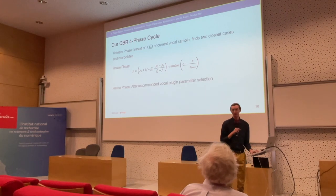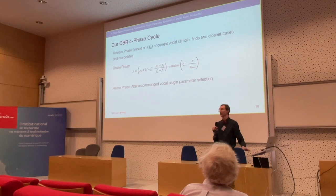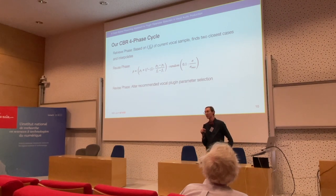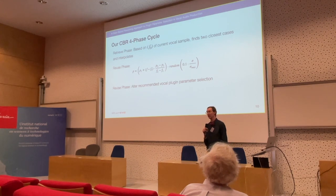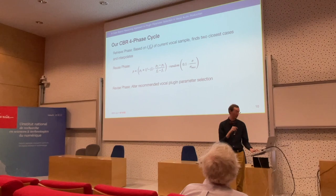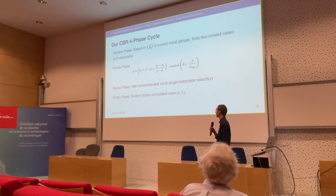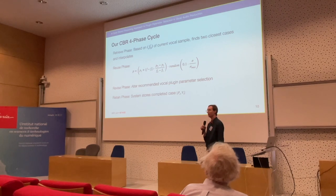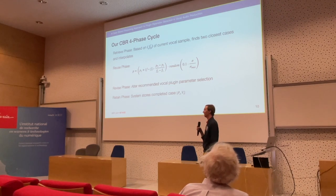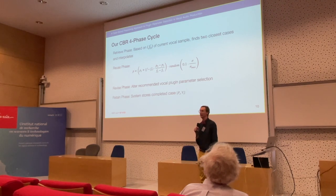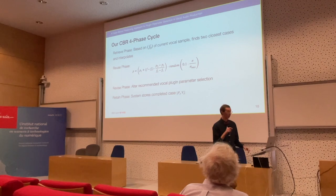For the revise phase, once the agent set all the selected parameters, the artist had the opportunity to change and alter all 35 parameters within the plugin to achieve their musical goal however they saw fit. For the retain phase, we stored the case as an array of two sets: one with 35 parameter values, and one for the vocal tracks — capturing the length, the fundamental frequency, and the standard deviation for the voice.